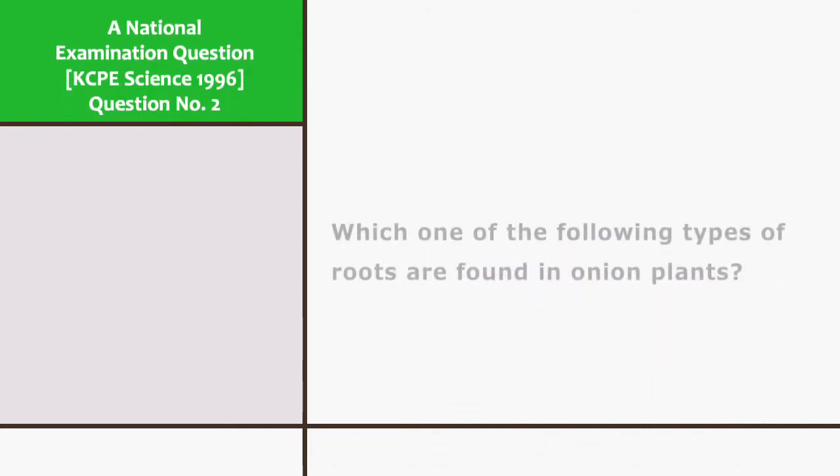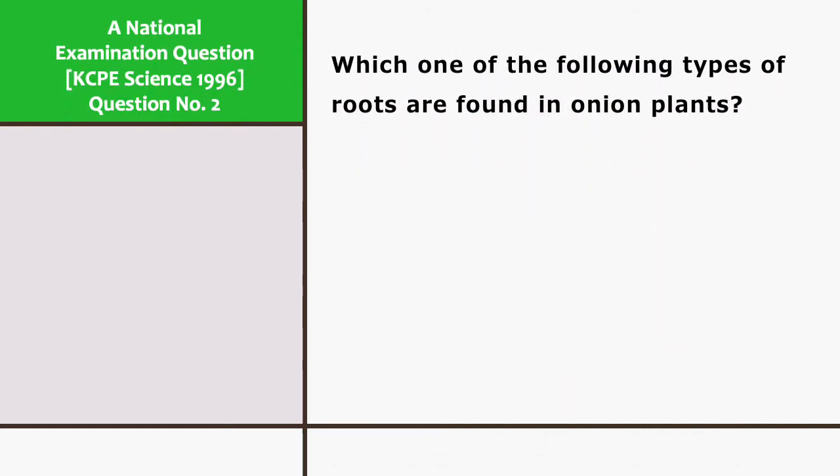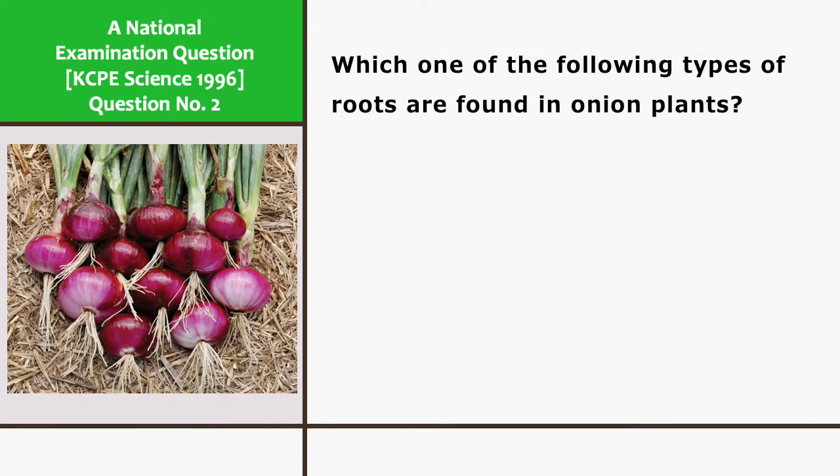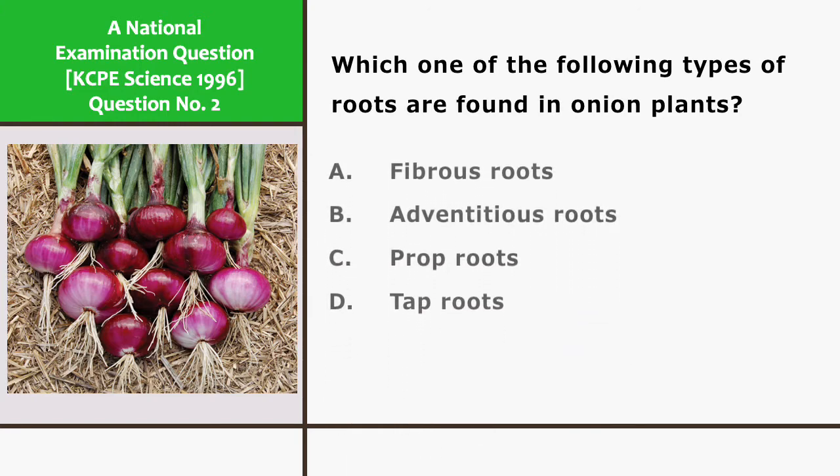Which one of the following types of roots are found in onion plants? A. Fibrous roots. B. Adventitious roots. C. Prop roots. And D. Tap roots.